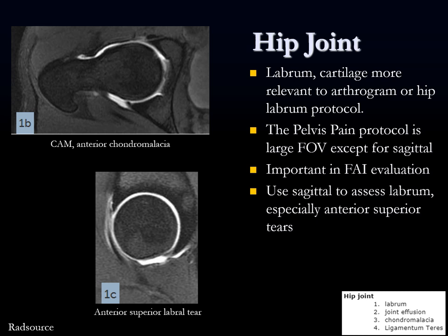Here are examples of cam FAI with labral tear. You can clearly see how the anterior femoral head-neck junction is too protuberant - that's a clear cam morphology. A common place for labral tears with cam FAI is the anterior superior labrum, and here's a nice example of an anterior superior labral tear seen on sagittal imaging.